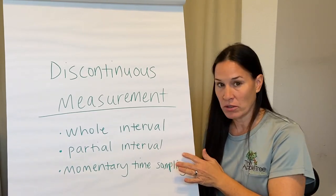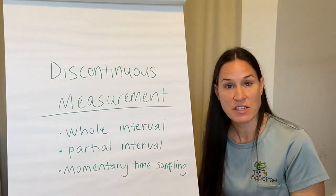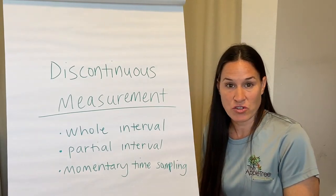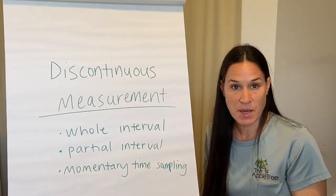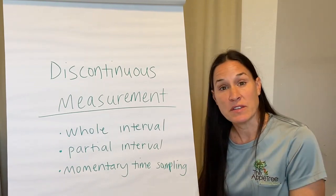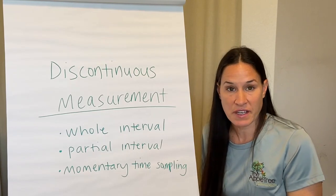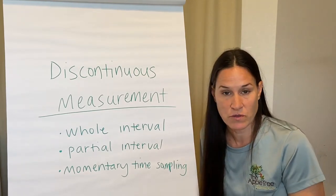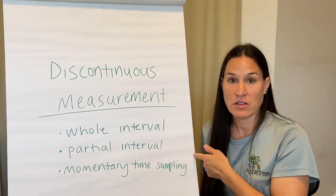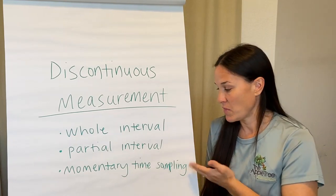Partial interval has different criteria: the behavior just needs to occur at any time during the interval. Let's say raising-hand behavior — the teacher is engaged in a lesson and asking students to participate. Using the same five-minute interval, the criteria for partial interval is simply: did the behavior occur or not? So the timer's going, four minutes and 52 seconds pass, your client raises their hand — check, they met the criteria. Even if your client raises their hand at two seconds in, then 25 seconds in, then two minutes in, then three minutes in, all you're recording is that it occurred. You're not saying how many times or how long — just that it met the criteria.